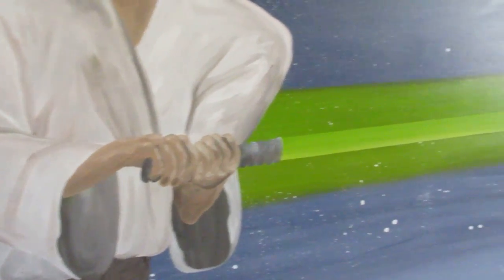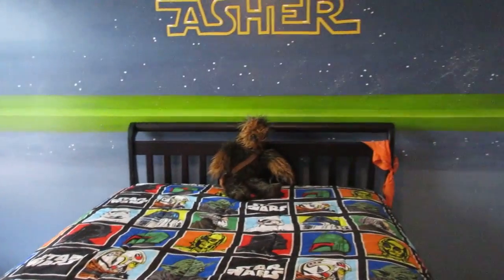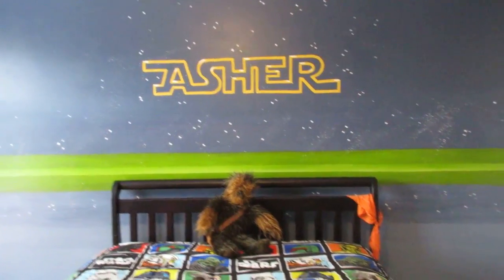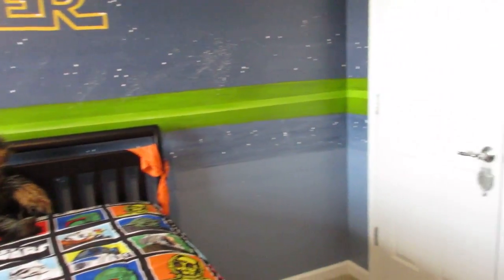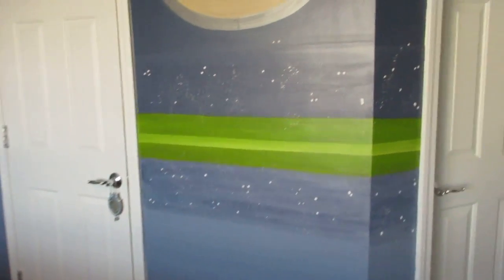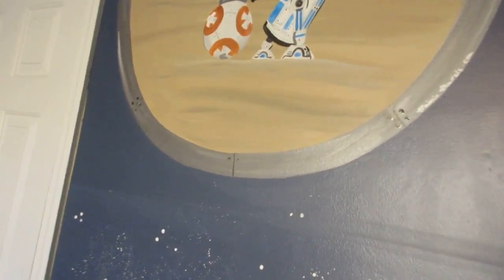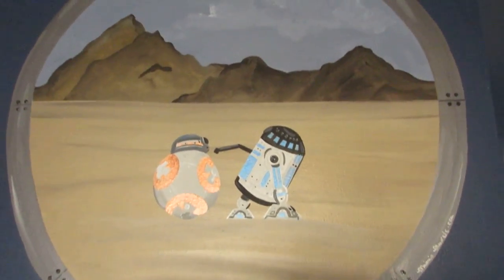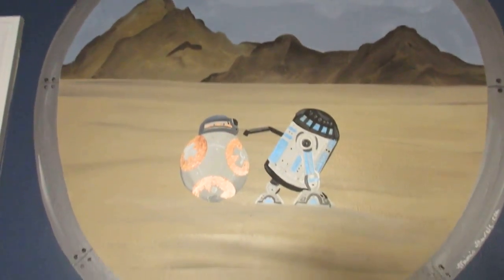And here's Luke Skywalker holding the saber that continues all the way, pardon the light, around the room. And then Asher's name in the classic font. And then over here we have another portal with R2-D2 and BB-8.